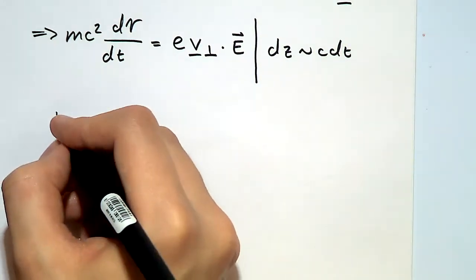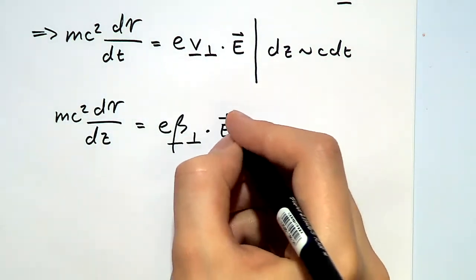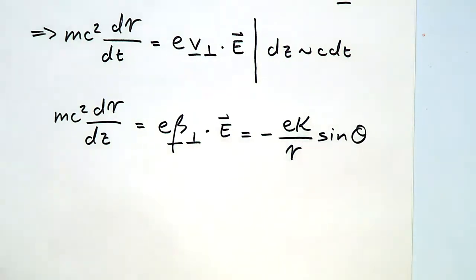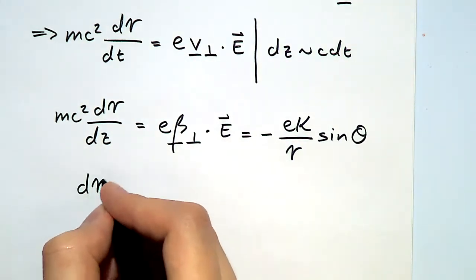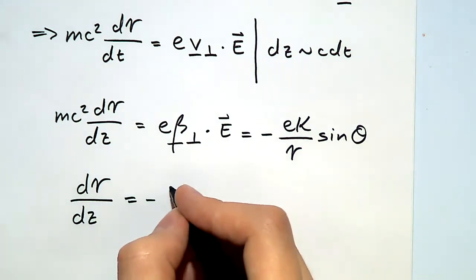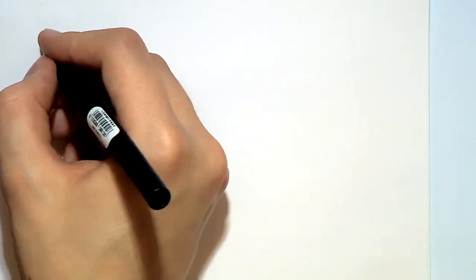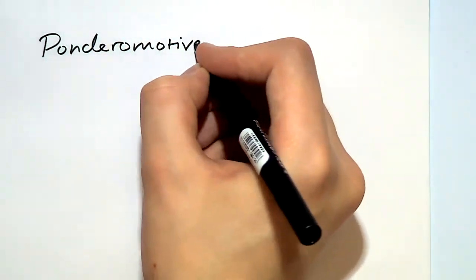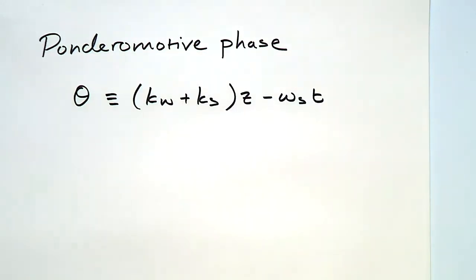Assuming that the electrons are ultra-relativistic, so they're moving at almost the speed of light, we can change the time derivative into a spatial derivative. Then, computing the dot product with the help of a trig identity, we see that the change in the energy is proportional to sin θ, where θ is the ponderomotive phase. It's one of the most important parameters of the free electron laser.